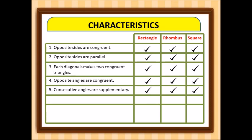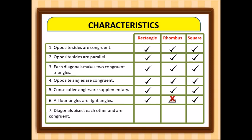The fifth characteristic is that consecutive angles are supplementary — true for the rectangle, rhombus, and square. The sixth is that all four angles are right angles — true for a rectangle and the square, but not a rhombus. The seventh is that diagonals bisect each other and are congruent. What's special in a rhombus and the square is that the diagonals are perpendicular, forming a 90-degree angle.